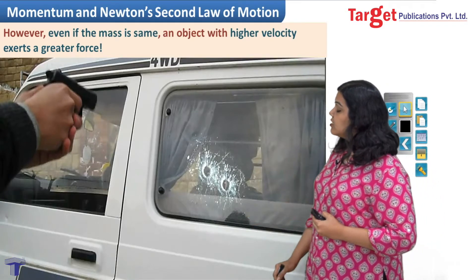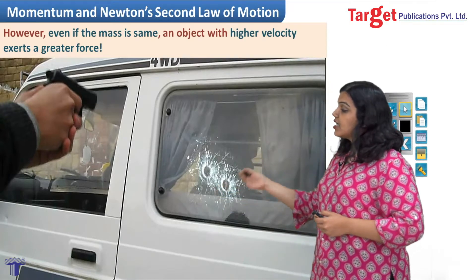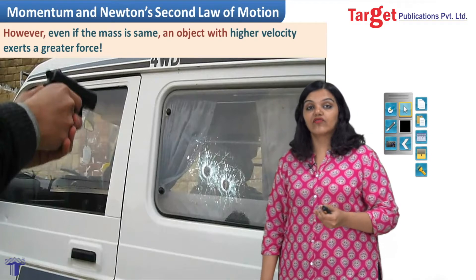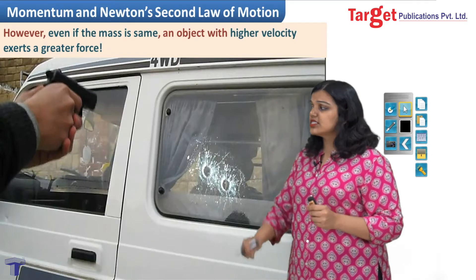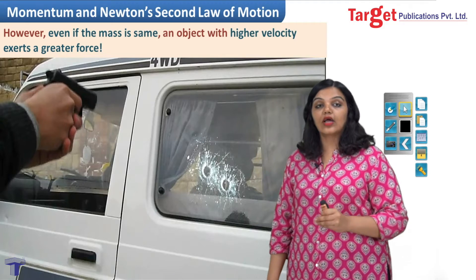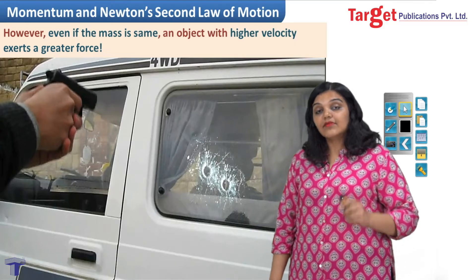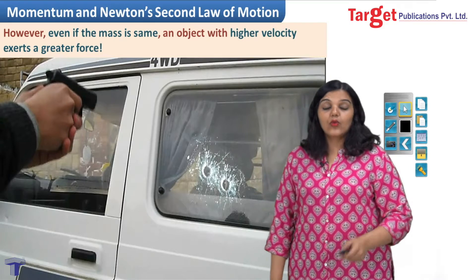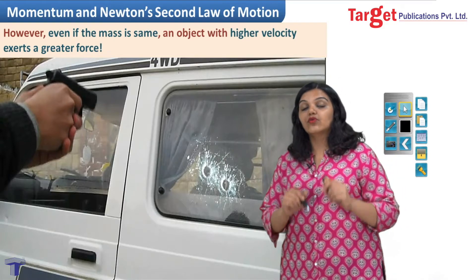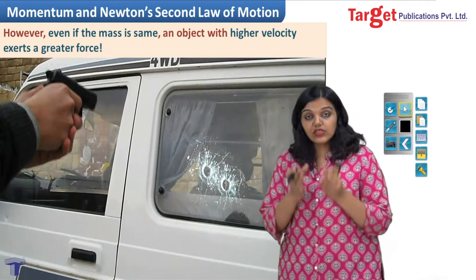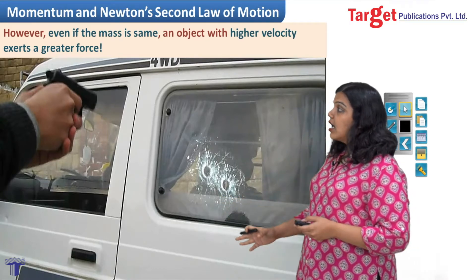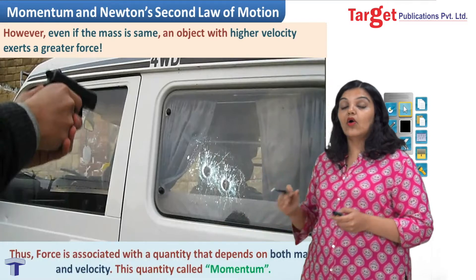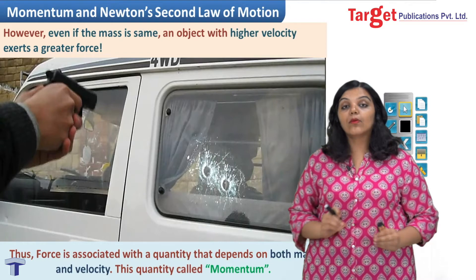For example, as you can see in this picture, this bullet has shattered the glass of this car, and this is only possible because of the great velocity of the bullet. If this bullet was somehow thrown at this window, obviously the glass would not shatter. So that means the force required also depends on the velocity of the object. The force required depends not only on mass and not only on velocity, but on something depending on both.